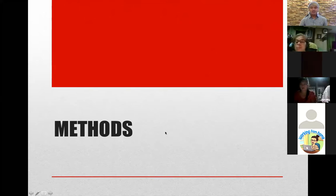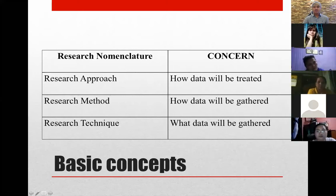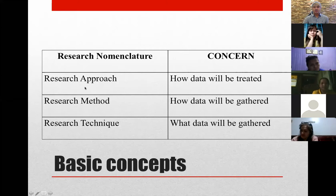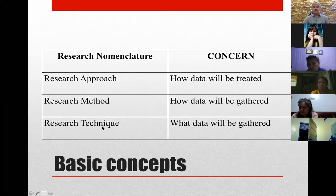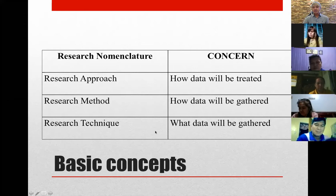Chapter two in Mekawa and Kale is entitled 'Methods.' Under methods, there are basic concepts you need to be reminded of: research approach, research method, and research technique. When we say research approach, we are concerned about how data will be treated. When you say method, you are concerned about how data will be gathered. And the technique will answer the question: what data will be gathered.